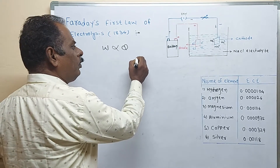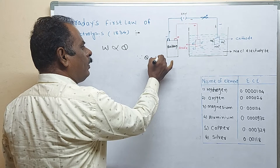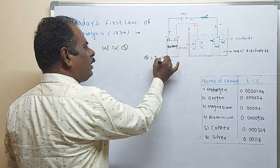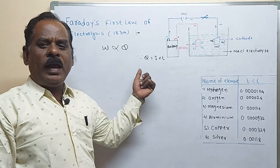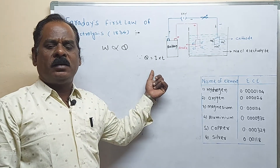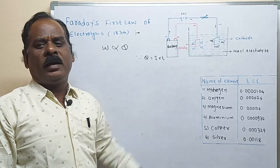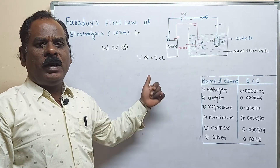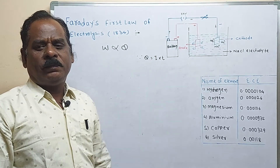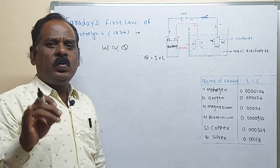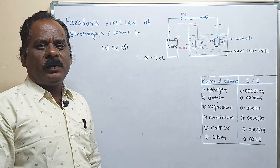Coulomb — you know that Coulomb is equal to ampere of current I multiplied by time T. One ampere of current passed in one second through the conductor gives one Coulomb of electricity. Coulomb is a unit of charge or quantity of electricity.